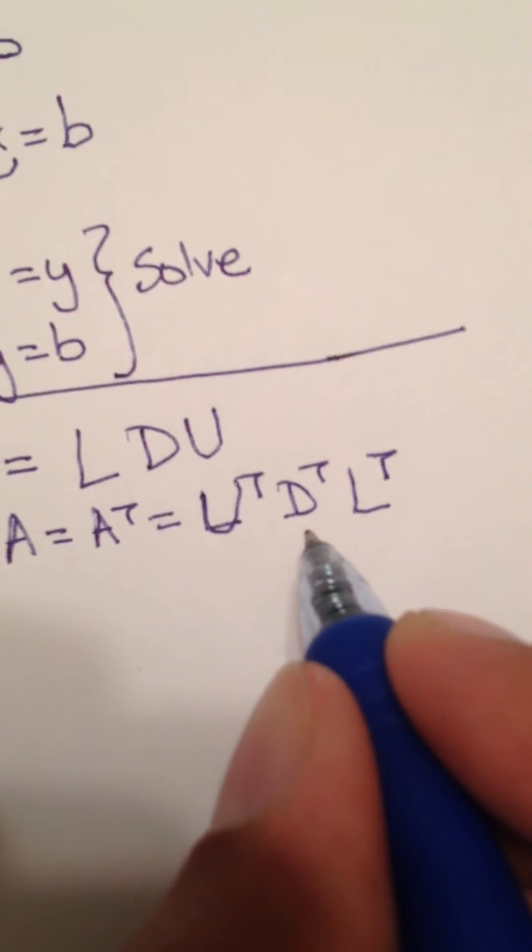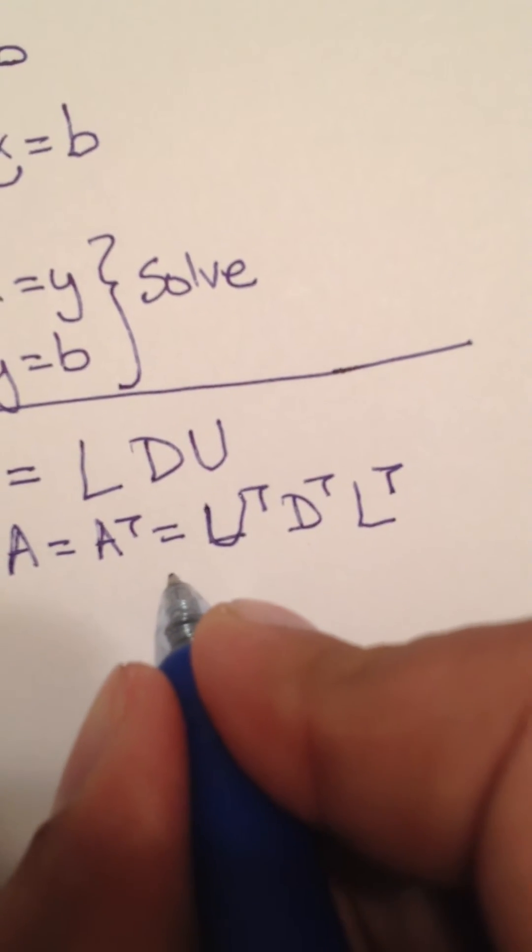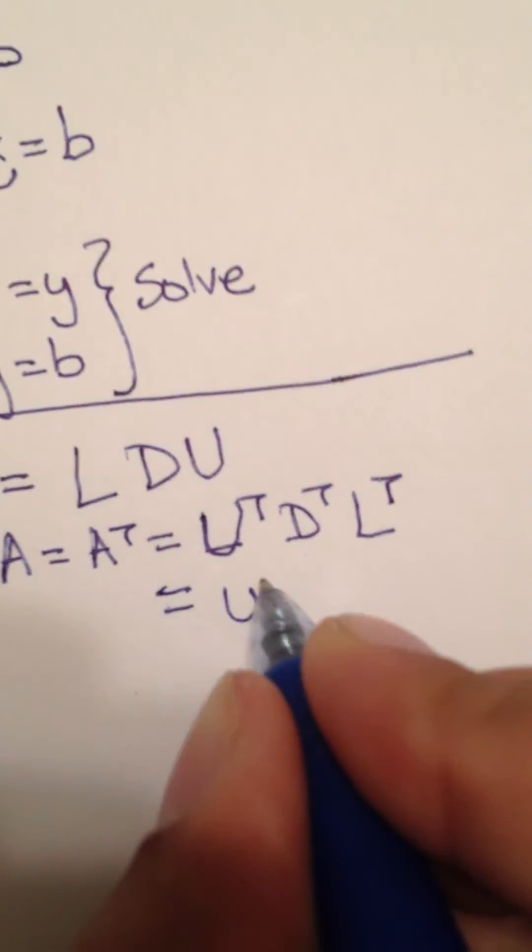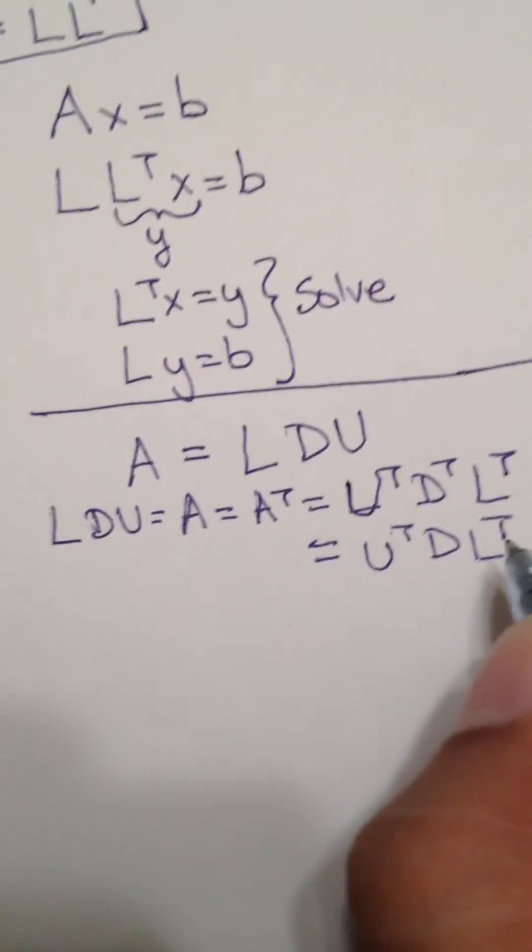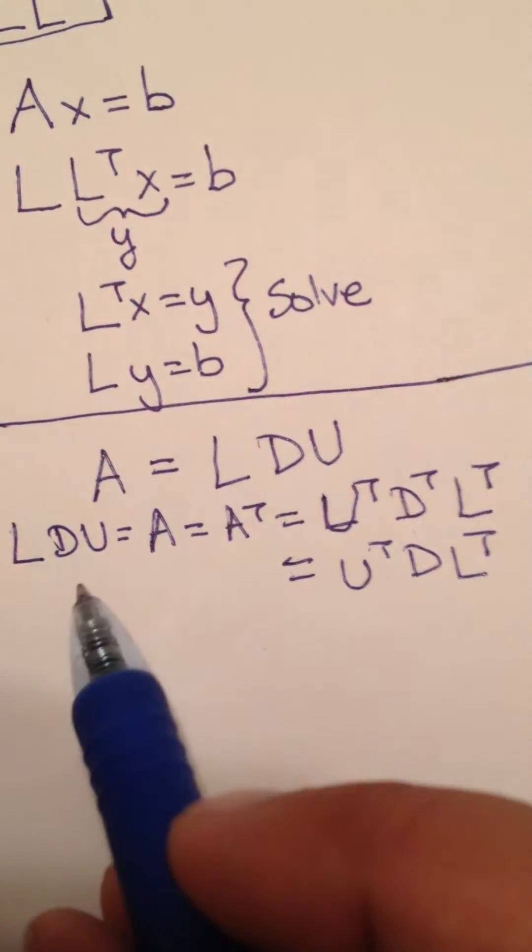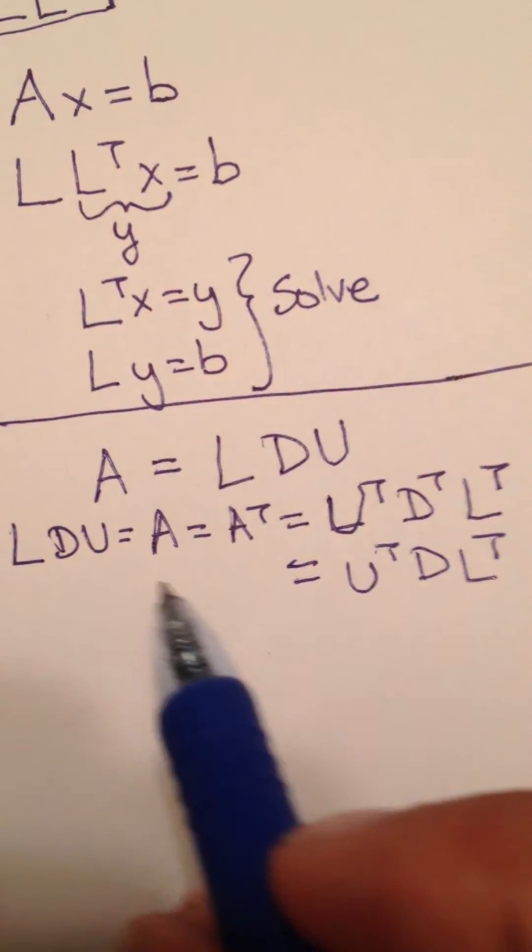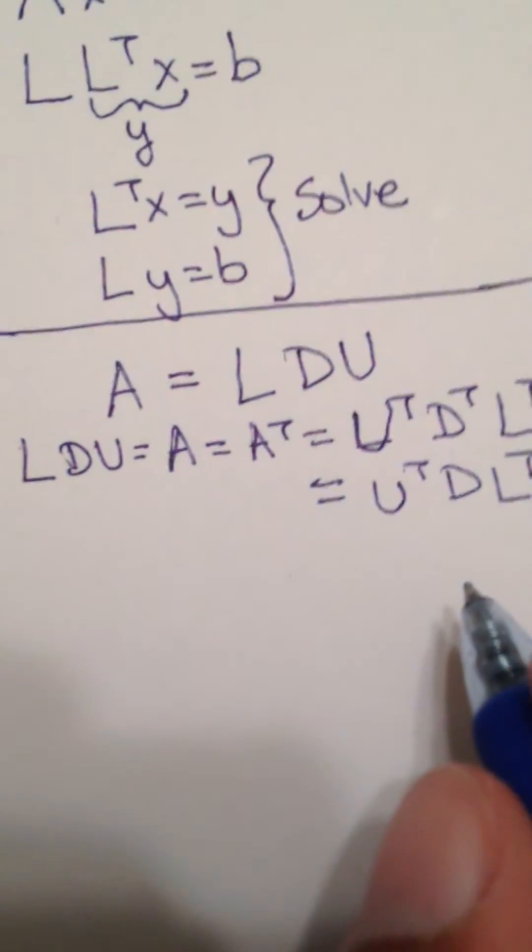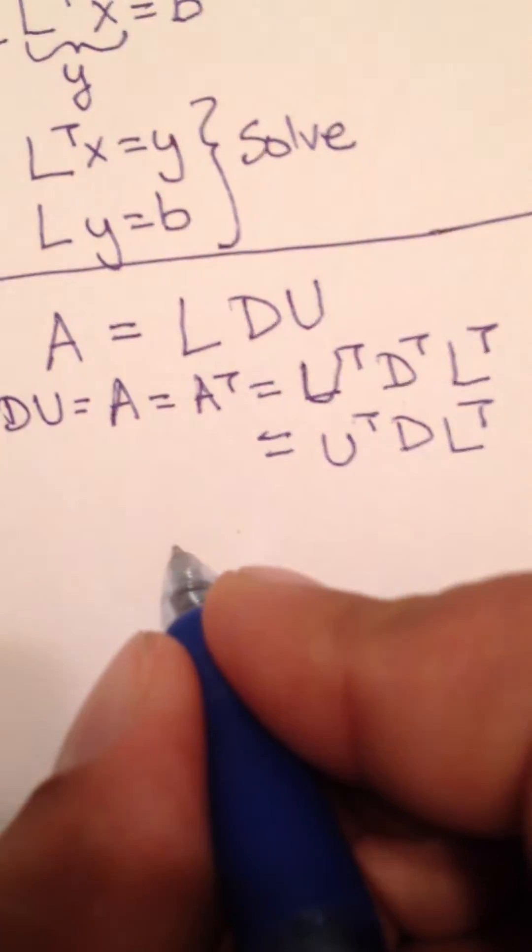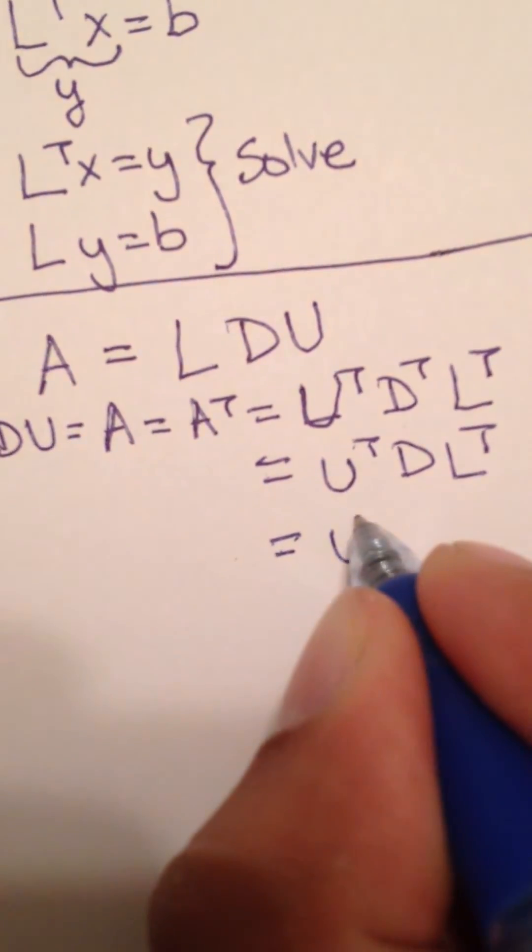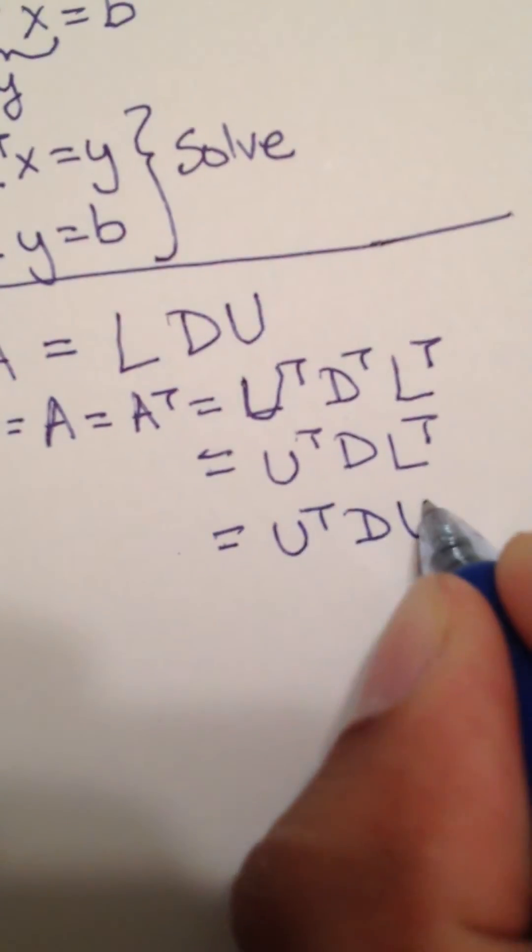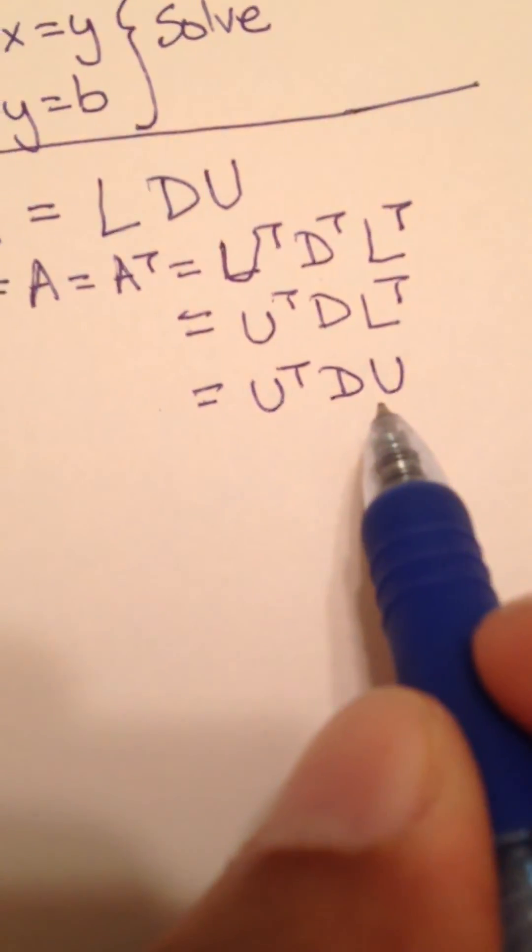Now, D is a diagonal matrix, so it's equal to D itself. So you can just say U transpose D L transpose. Now notice that since these two are equal, L is equal to U transpose and U is equal to L transpose. So you can also write this as U transpose D U.